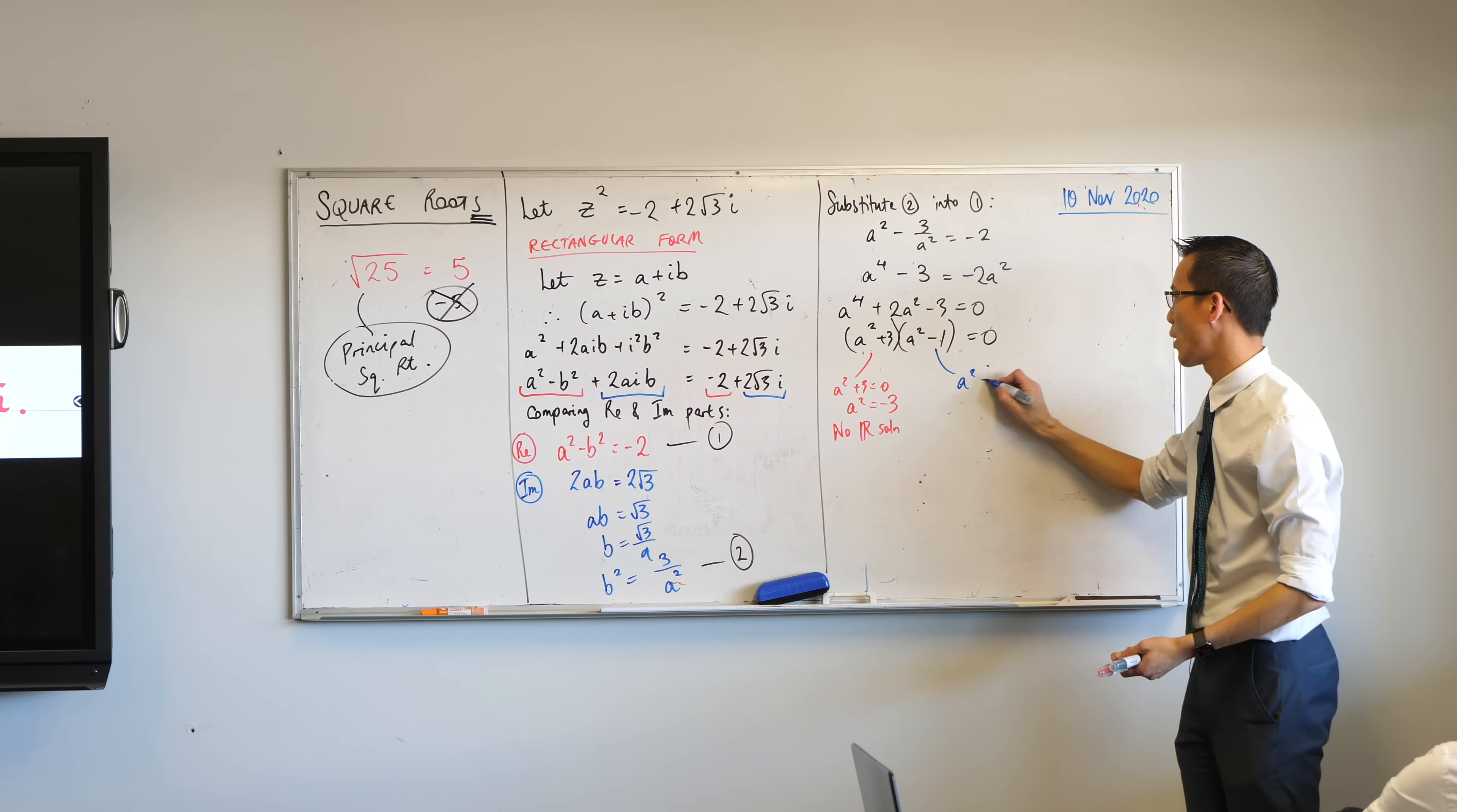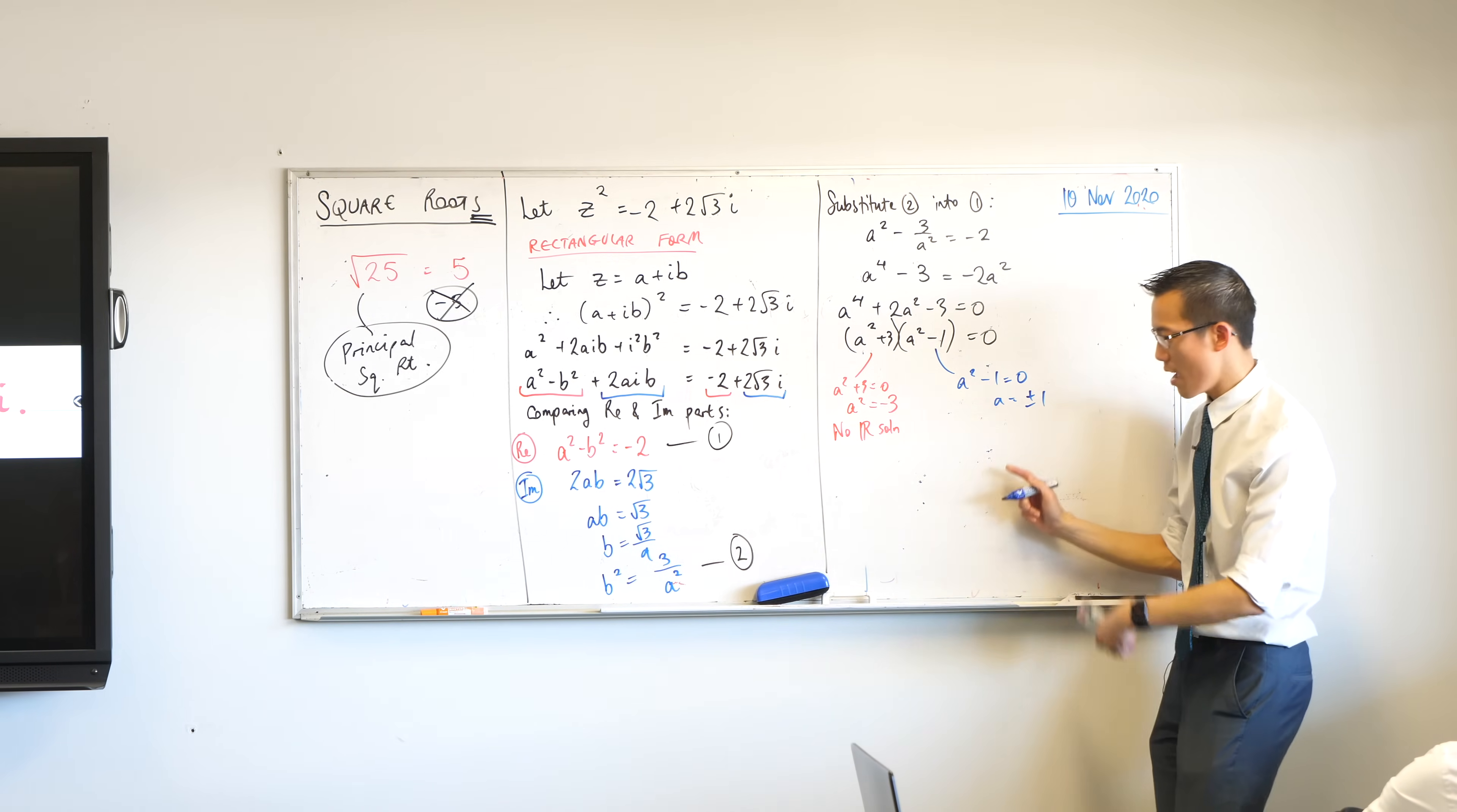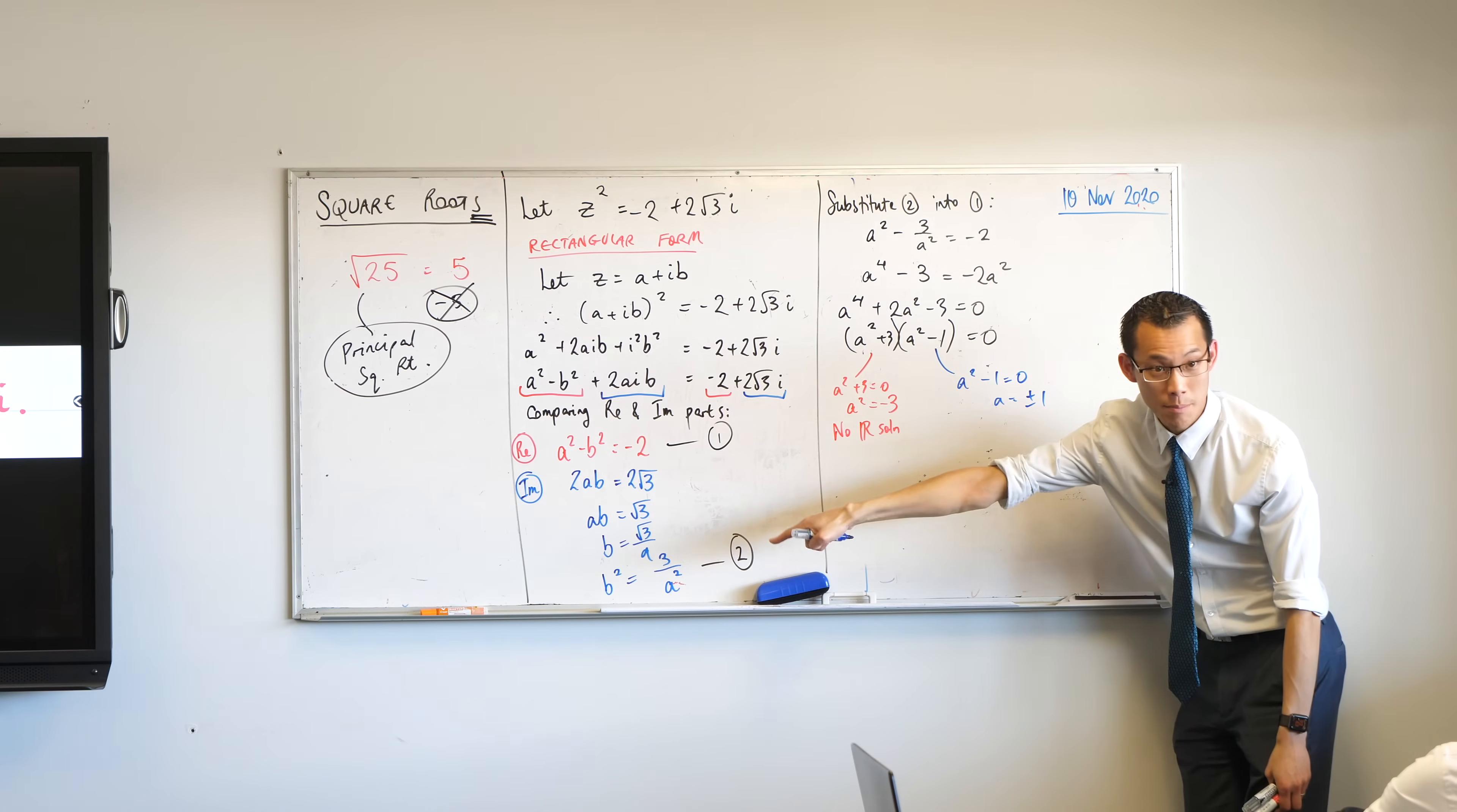But this other side does give you a real solution, doesn't it? Clearly, if a squared minus one equals zero, a is going to give you plus or minus one. And from there, you can go back over here. Plus or minus one.